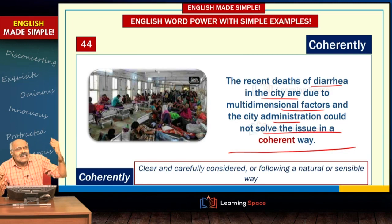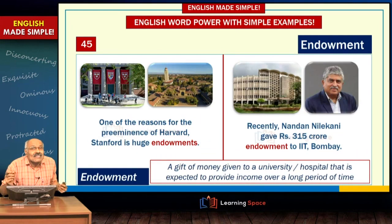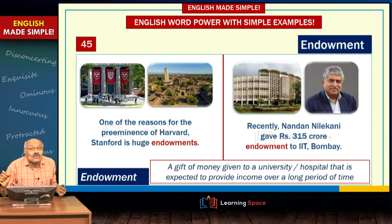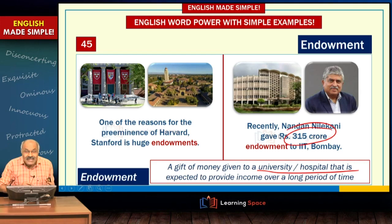Concurrently, consecutively, and simultaneously — these three words will be discussed in upcoming lectures. Next word: 'endowment'. This word came to prominence because recently a ₹315 crore donation was given to IIT Bombay by its alumnus Nandan Nilekani. Endowment means the gift of money given to a university or hospital, where this money is expected to generate income over a period of time.